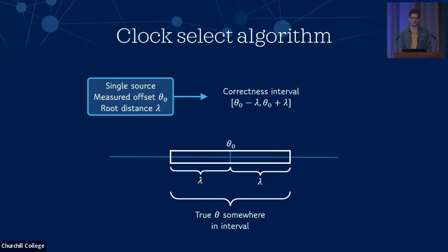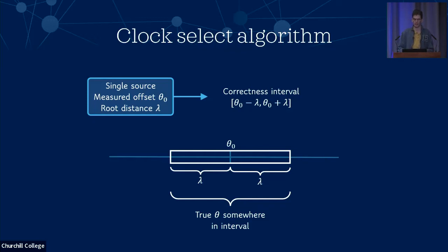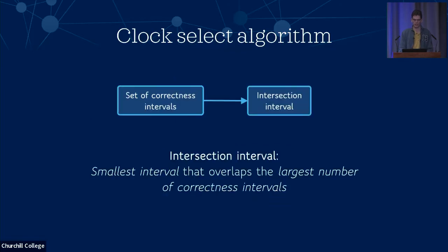The way we do this is by defining a correctness interval for each source, defined as the measured offset plus or minus the root distance. We say the true value of the offset is going to be somewhere within this interval. This interval is bigger for samples with a larger root distance and smaller for ones with smaller error bounds. We do this for each of our sources and want to find the biggest overlap between them, which we call the intersection interval — the smallest interval which overlaps the biggest number of correctness intervals — and then label all sources in the intersection interval as our set of true chimers.